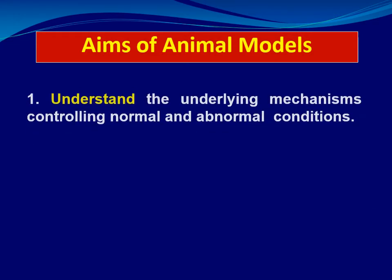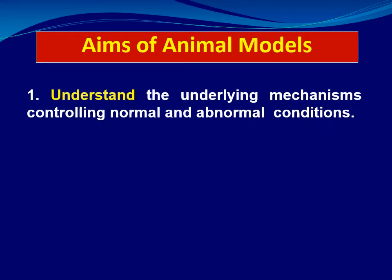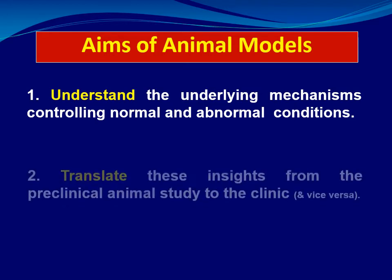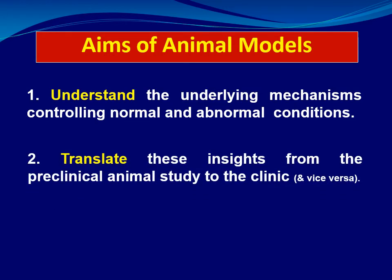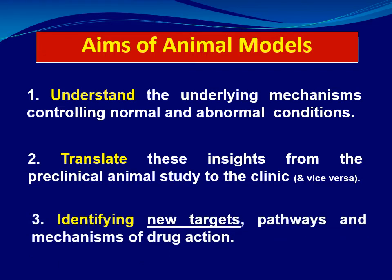Why do we use animal models? First, to understand the underlying mechanisms controlling normal and abnormal conditions, and to understand the pathophysiology of various diseases. This allows us to translate insights from preclinical experimental studies to the clinical view, identify new targets, pathways, and mechanisms of drug action — with the main aim of developing new drugs to treat diseases with fewer side effects.